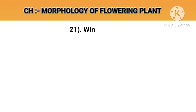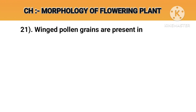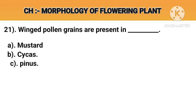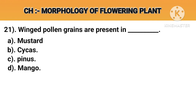Question number 21. Winged pollen grains are present in. Option A: Mustard. Option B: Cycas. Option C: Pinus. Option D: Mango. Answer C: Pinus.